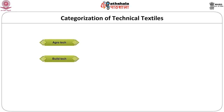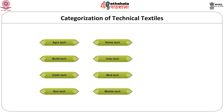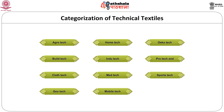This category covered all aspects of textile usage but it was not clearly understood. Therefore, a new set was formulated depending upon the area of usage. This was spelled out as agro-techs, build-techs, cloth-techs, geotechs, home-tech, indotech, meditech, mobile-tech, oak-tech, sports-techs, and protective-techs. You can see the diagram which shows the different categories of technical textiles.